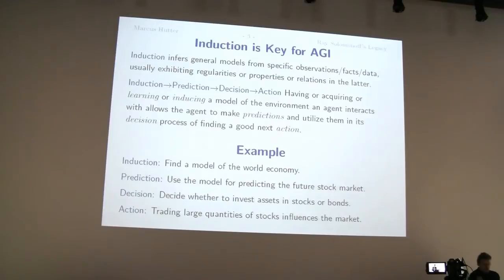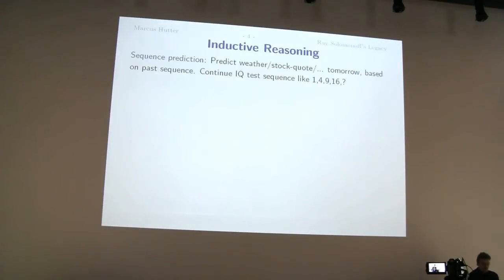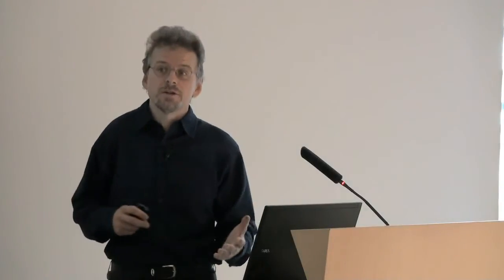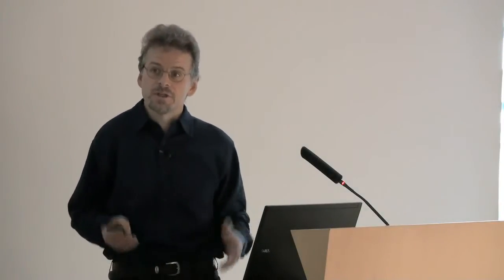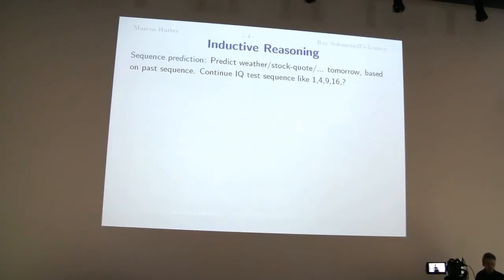And Ray for a long time only considered sort of up to this decision part. So here's some examples of inductive reasoning. Sometimes inductive reasoning is regarded more general. So it could be prediction and inductive inference. And inductive inference is defined more narrowly, but different people use this term differently. So sequence prediction belongs for some to the category of inductive reasoning. For instance, I mentioned already stock market prediction, or it could be IQ tests like 1, 4, 9, 16.